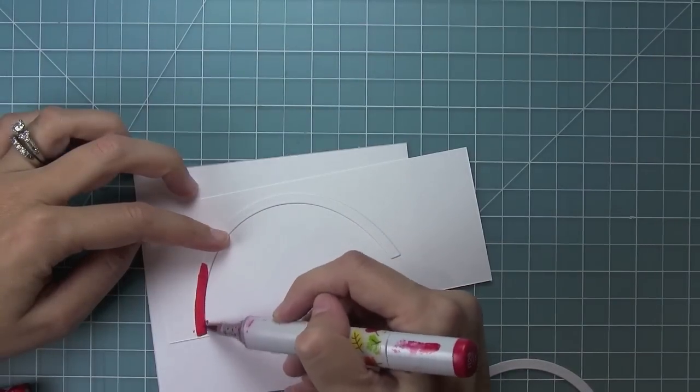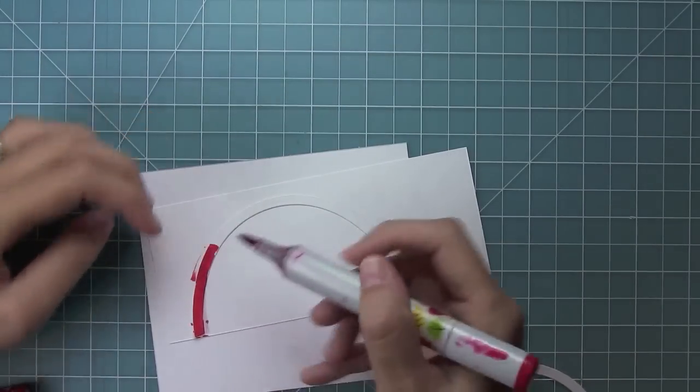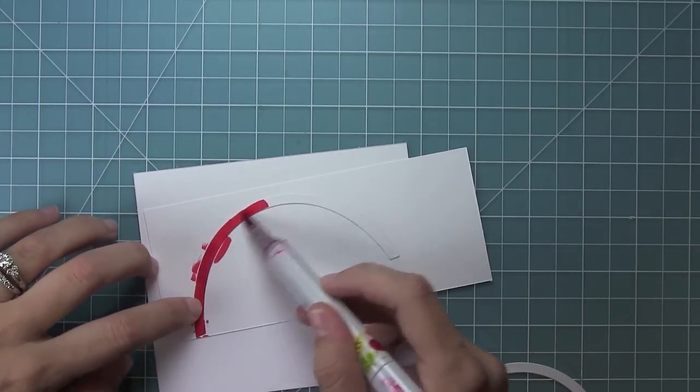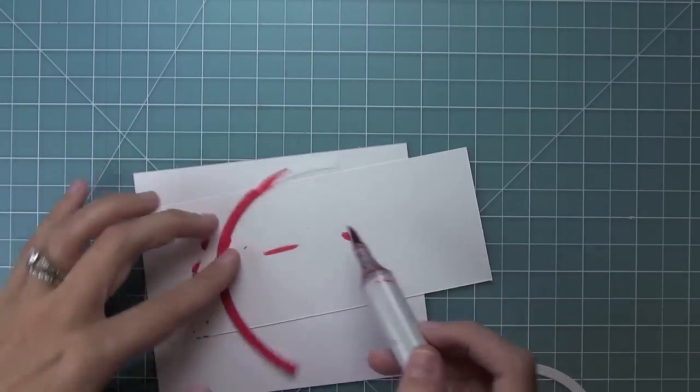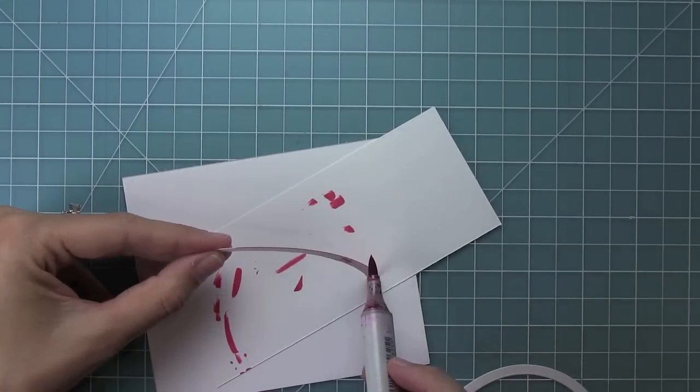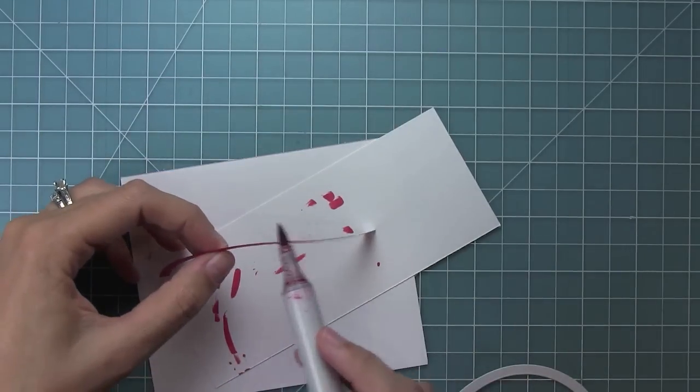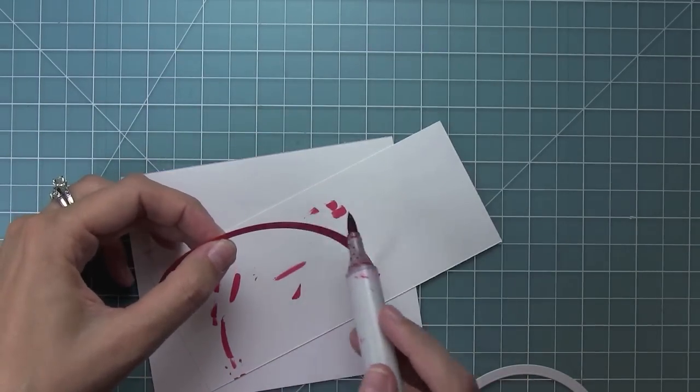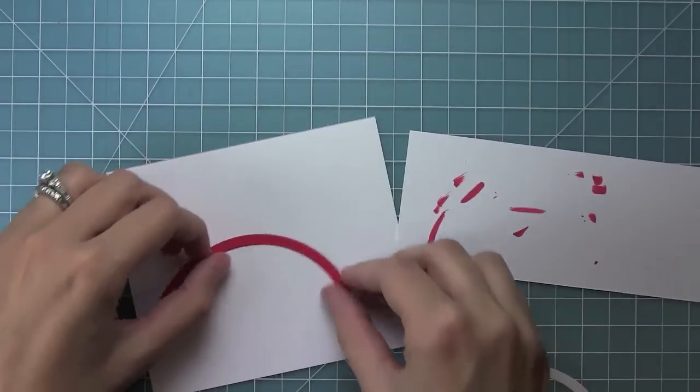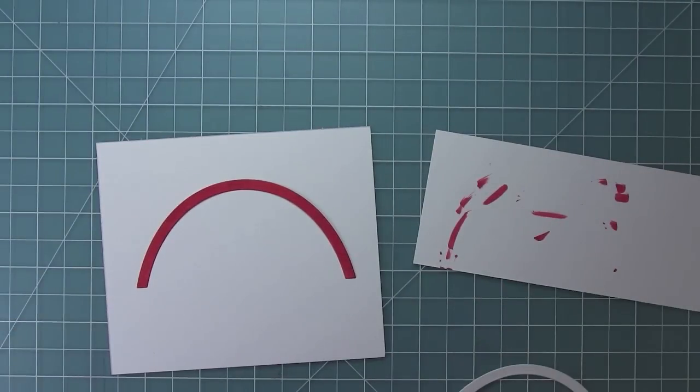Now one of the ways to color these rainbows would be to use markers or watercolors or distress inks, anything like that to color white colored cardstock. So here I'm using a Copic marker and I'm making sure to go around all of the outside edges too, because that's going to give it a really nice finished look which really makes it pop on that white background.